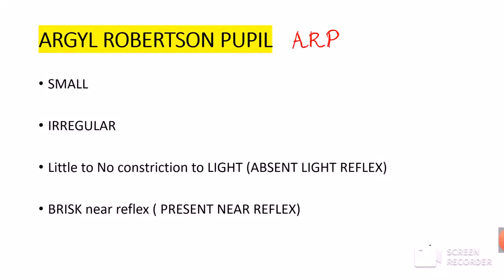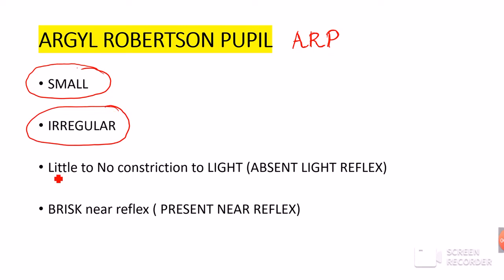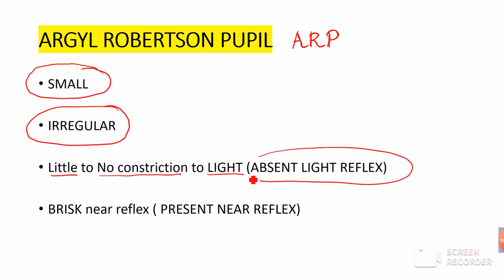Four important points are related to the Argyle Robertson pupil. First, the Argyle Robertson pupil is usually smaller. Second, it is irregular in shape. Third, there is very little or almost no constriction to light — meaning the light reflex is absent. And fourth, there is a very good near reflex — so the near reflex is present.